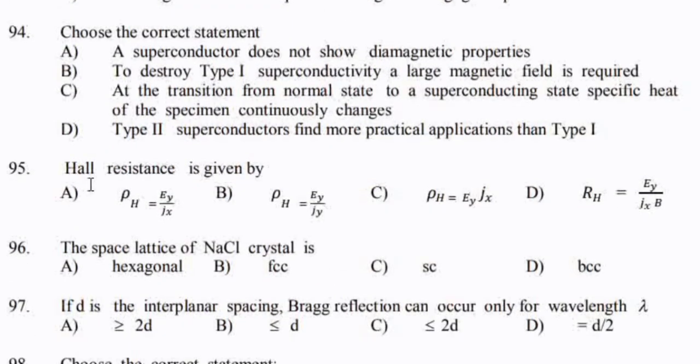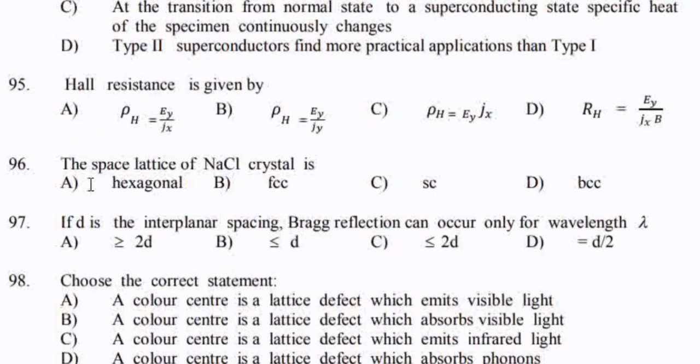Hall resistance is given by: rho_H is equal to E_Y divided by J_X.